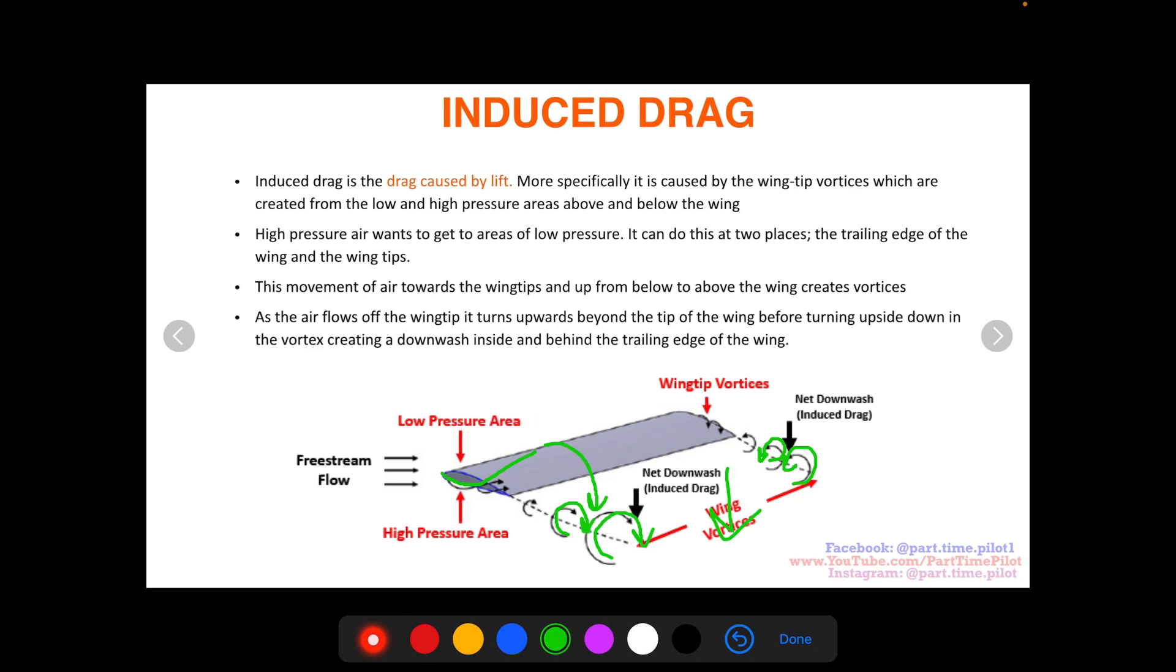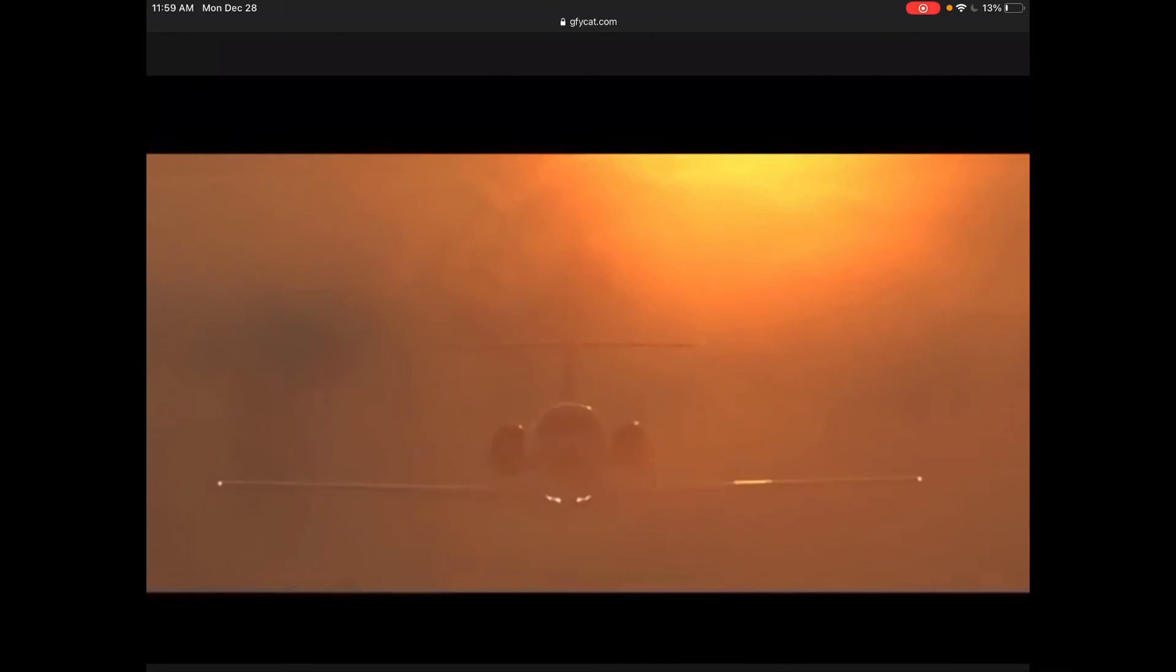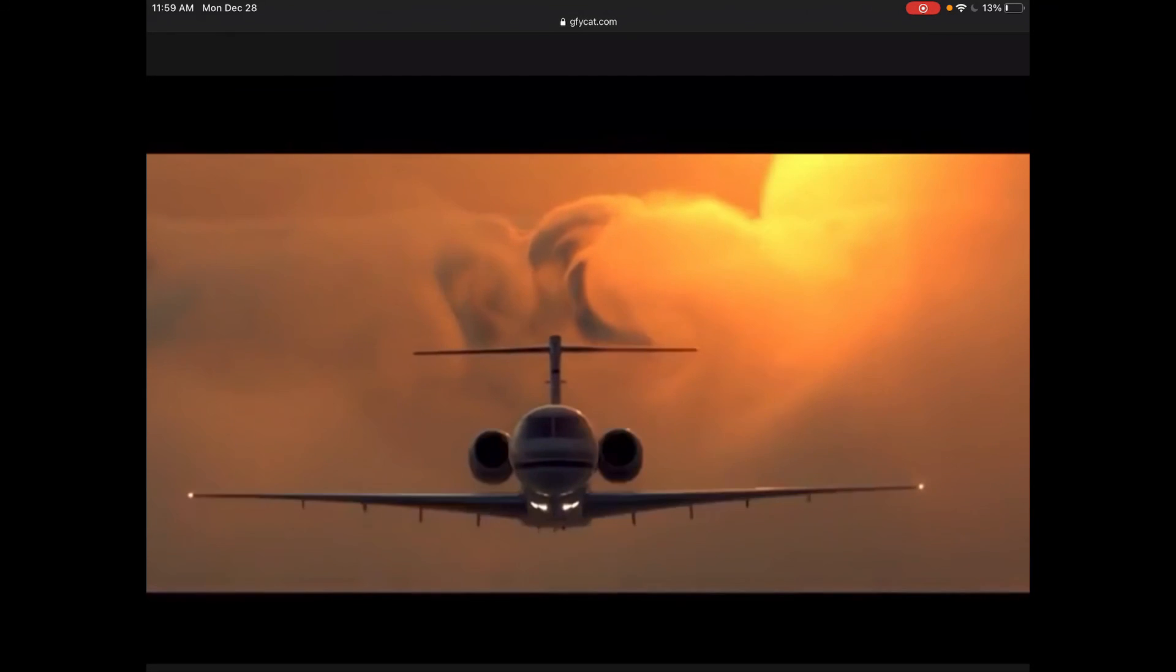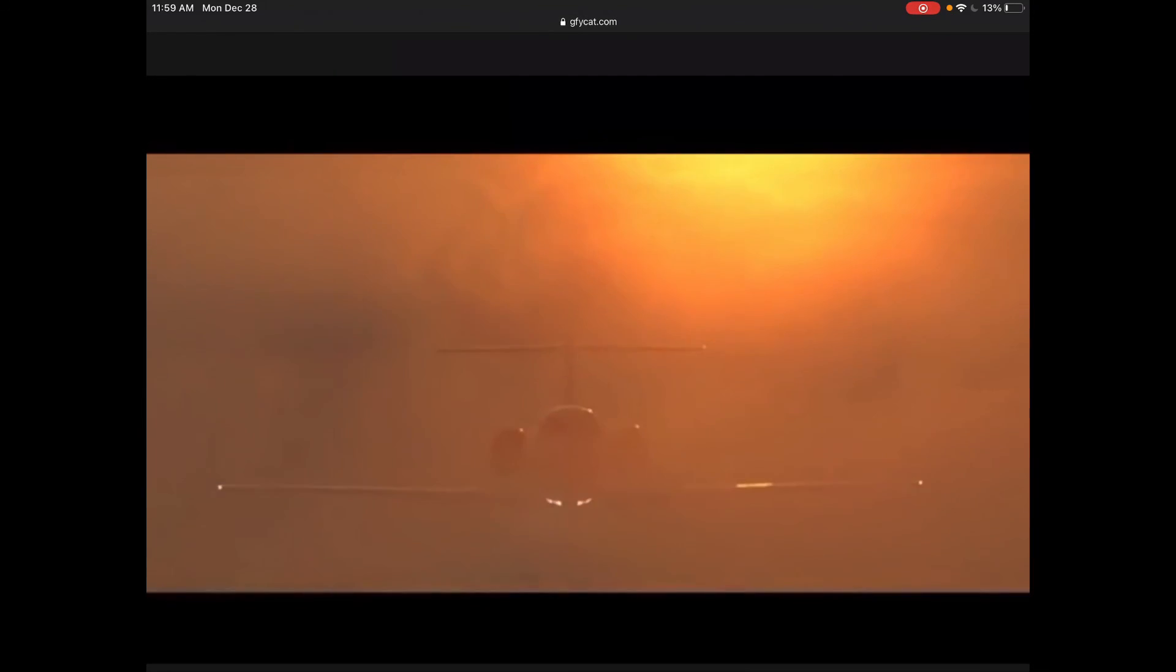This is induced drag caused by the vortices creating a net downwash off the back of your aircraft. Here's a gif showing the vortices in the clouds. As you can see, they turn down, and that downward net force is what causes that induced drag.